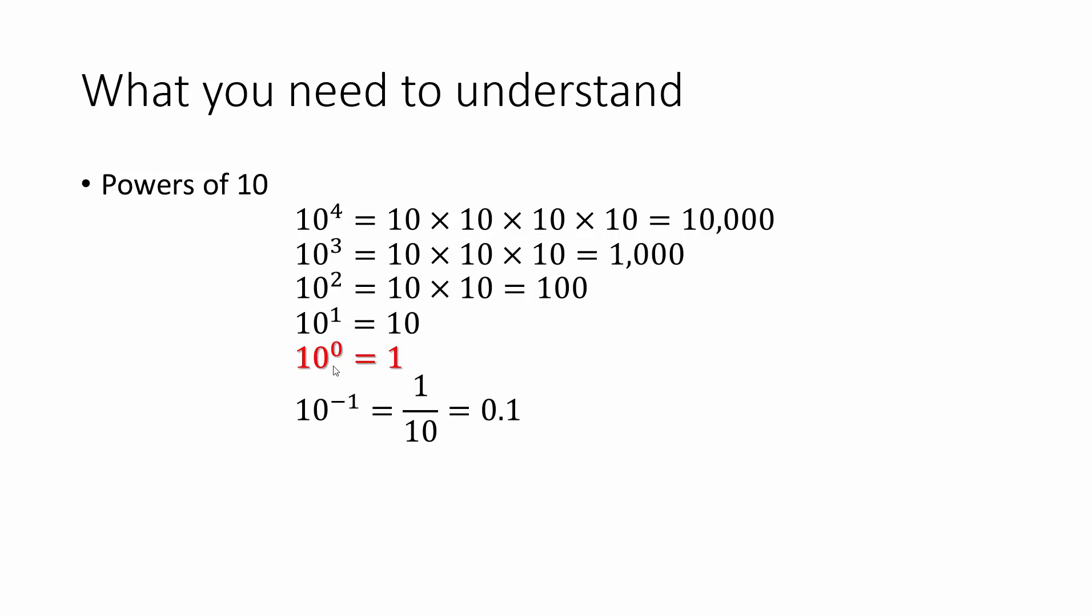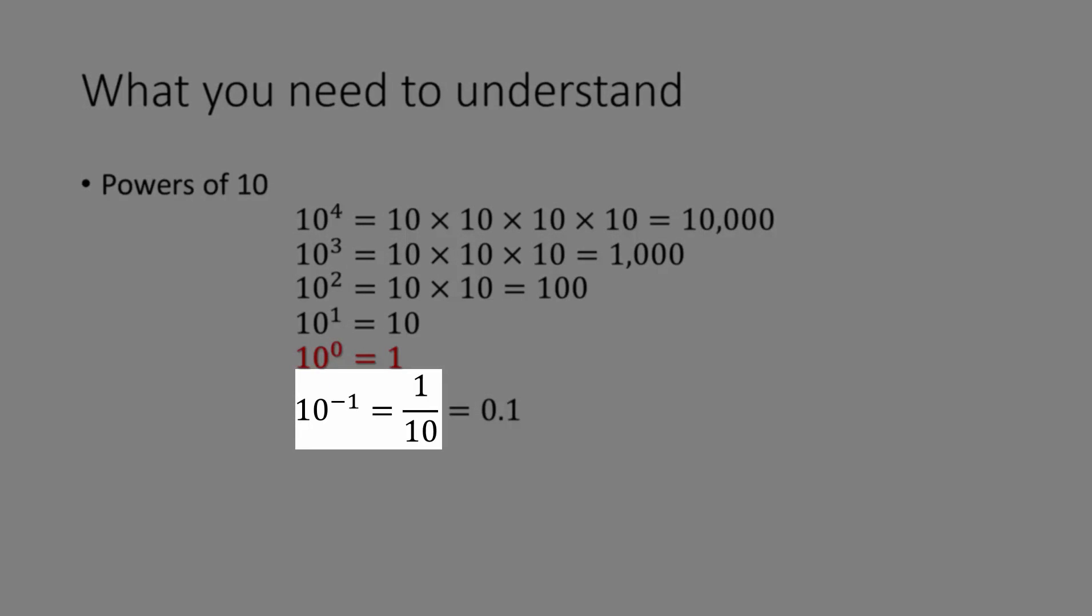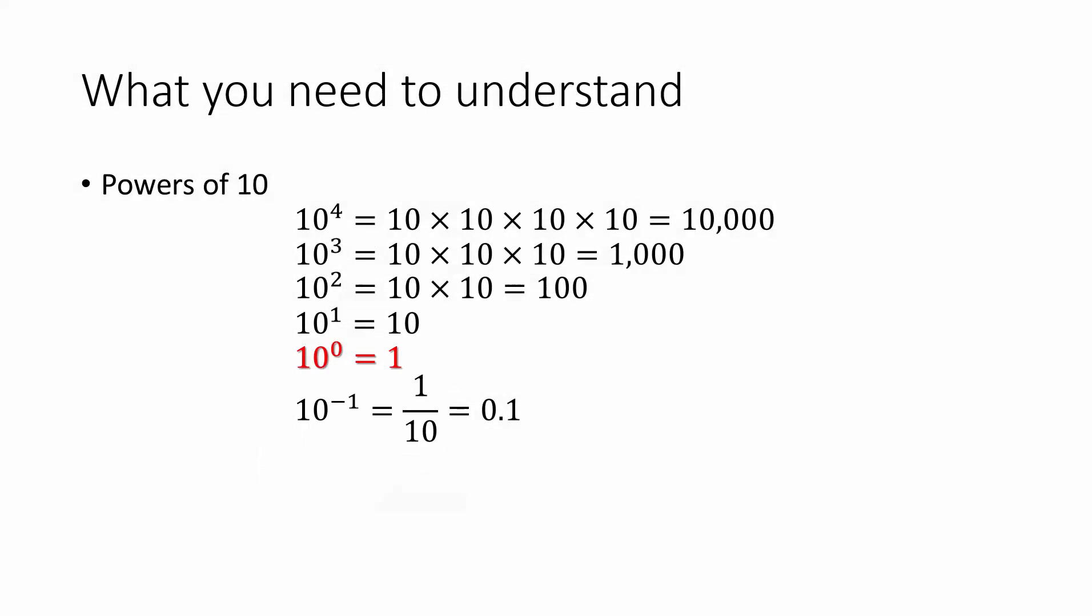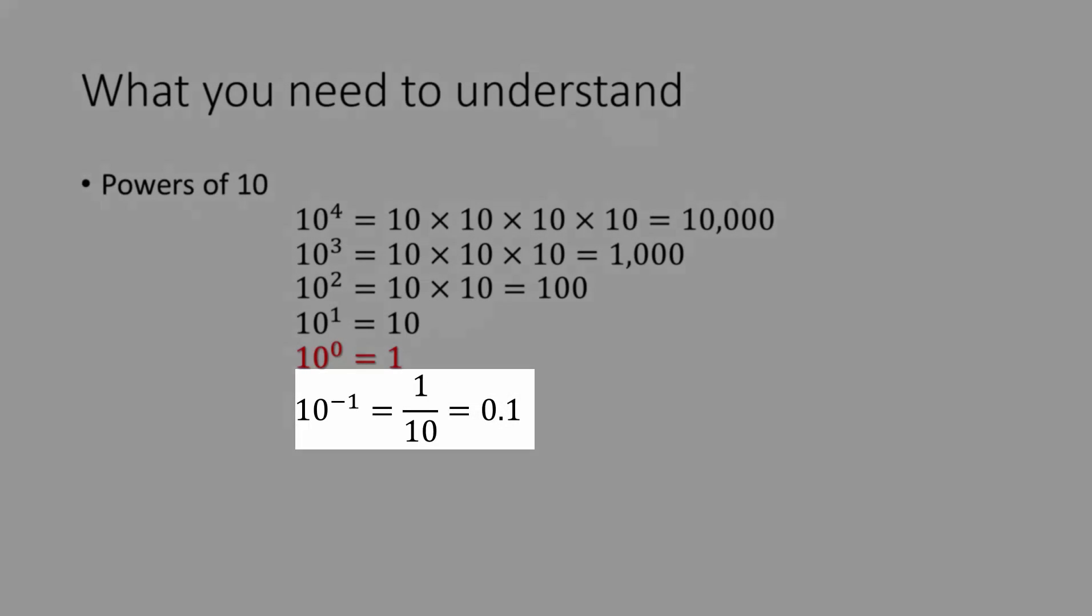After 10 to the 0, the pattern actually continues with negative exponents. When you raise 10 to the negative 1st power, that's telling you to take the reciprocal. In other words, move the 10 to the other side of the fraction bar, and we have 1 10th, which in decimal form is 0.1.